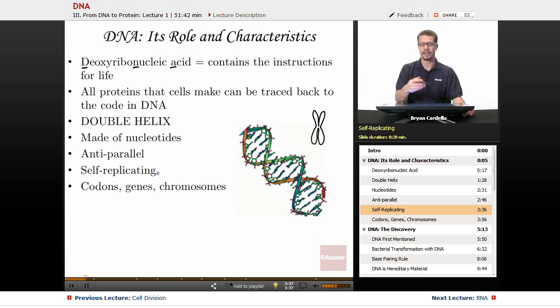It's self-replicating. Enzymes that are naturally found in cells, and DNA actually codes for those enzymes, allow DNA to be copied. And as long as you have those little nucleotides available, they can be put next to the other strand, and new strands can be made. And that has to happen before cell divides.